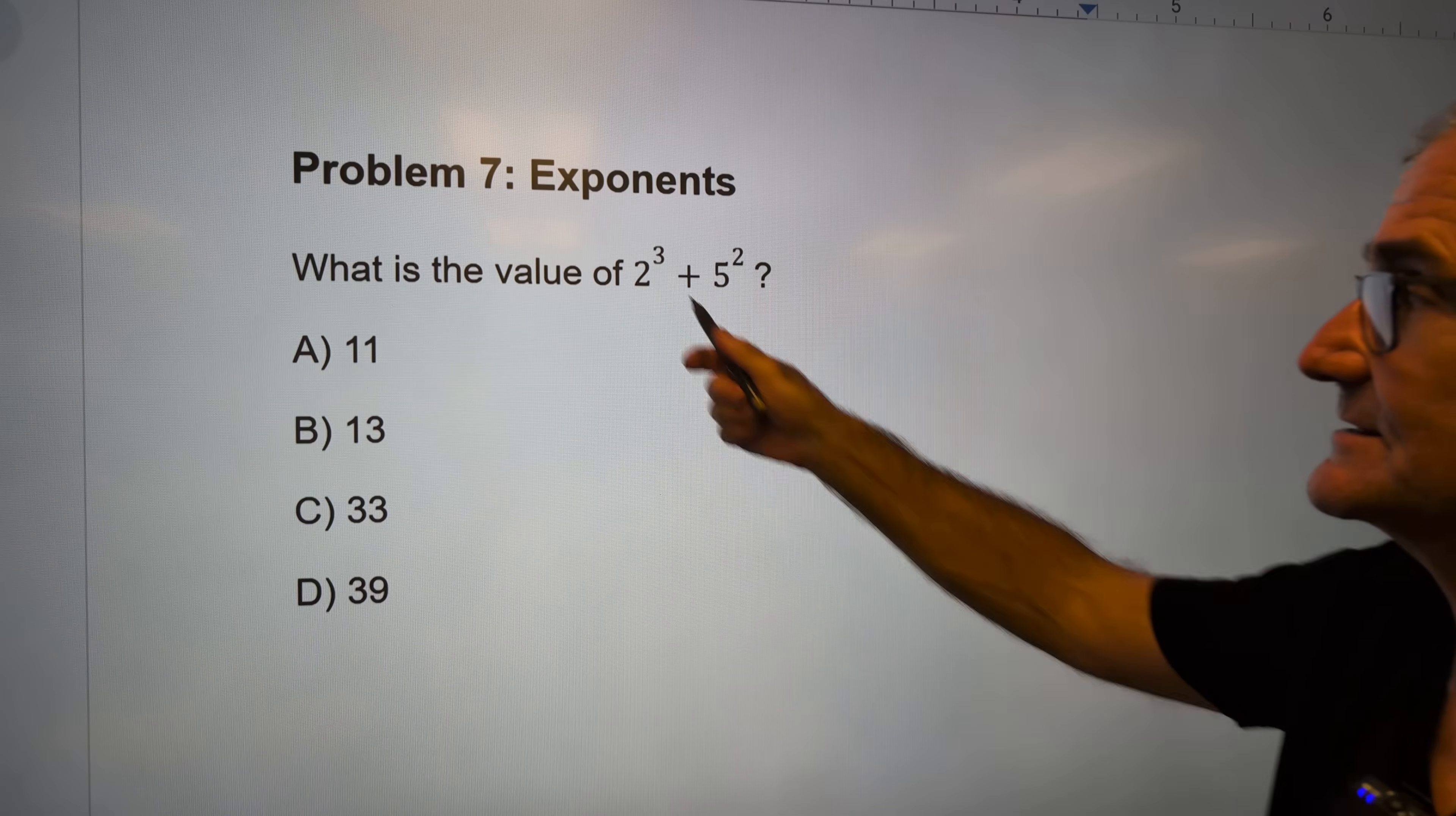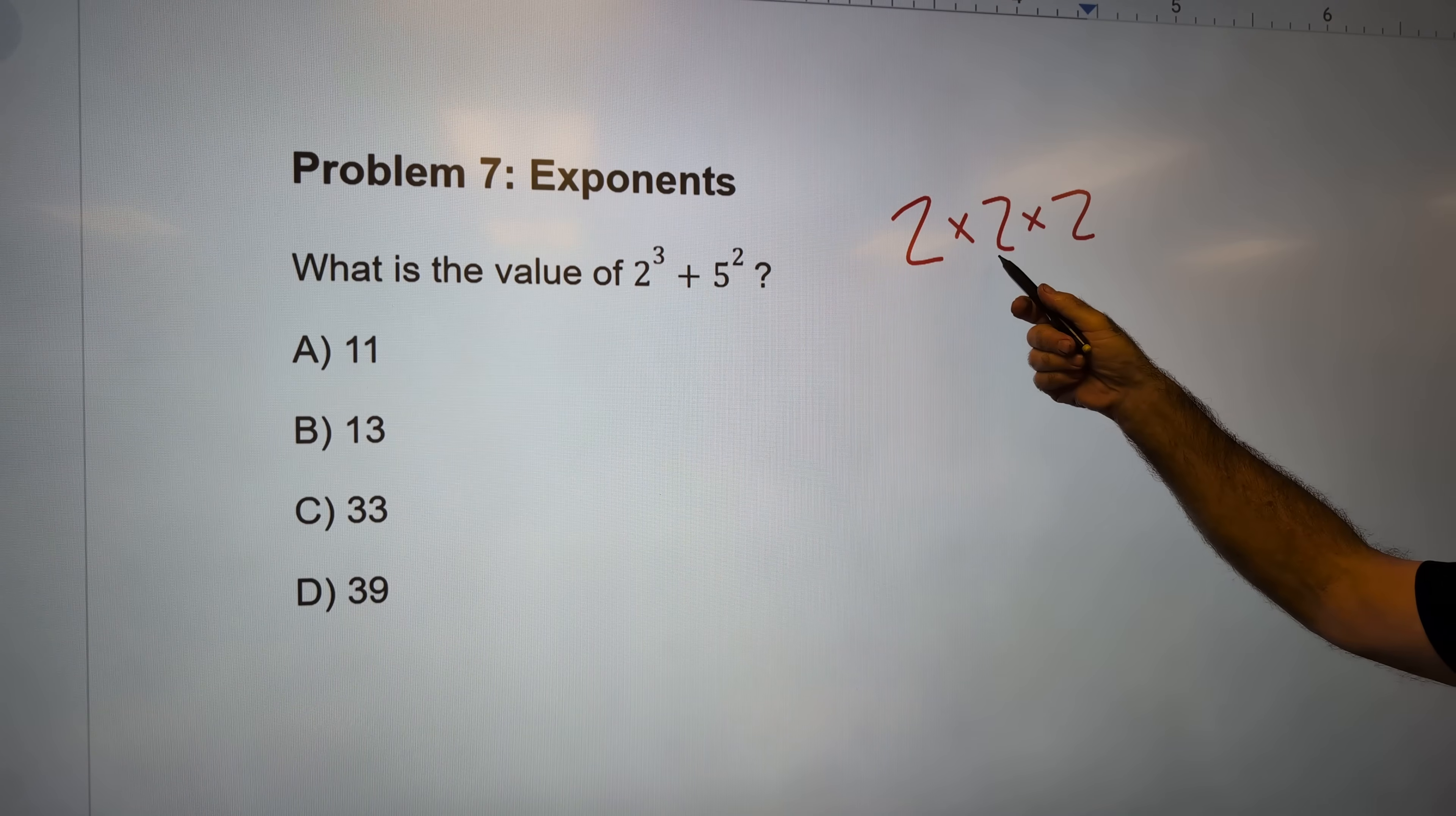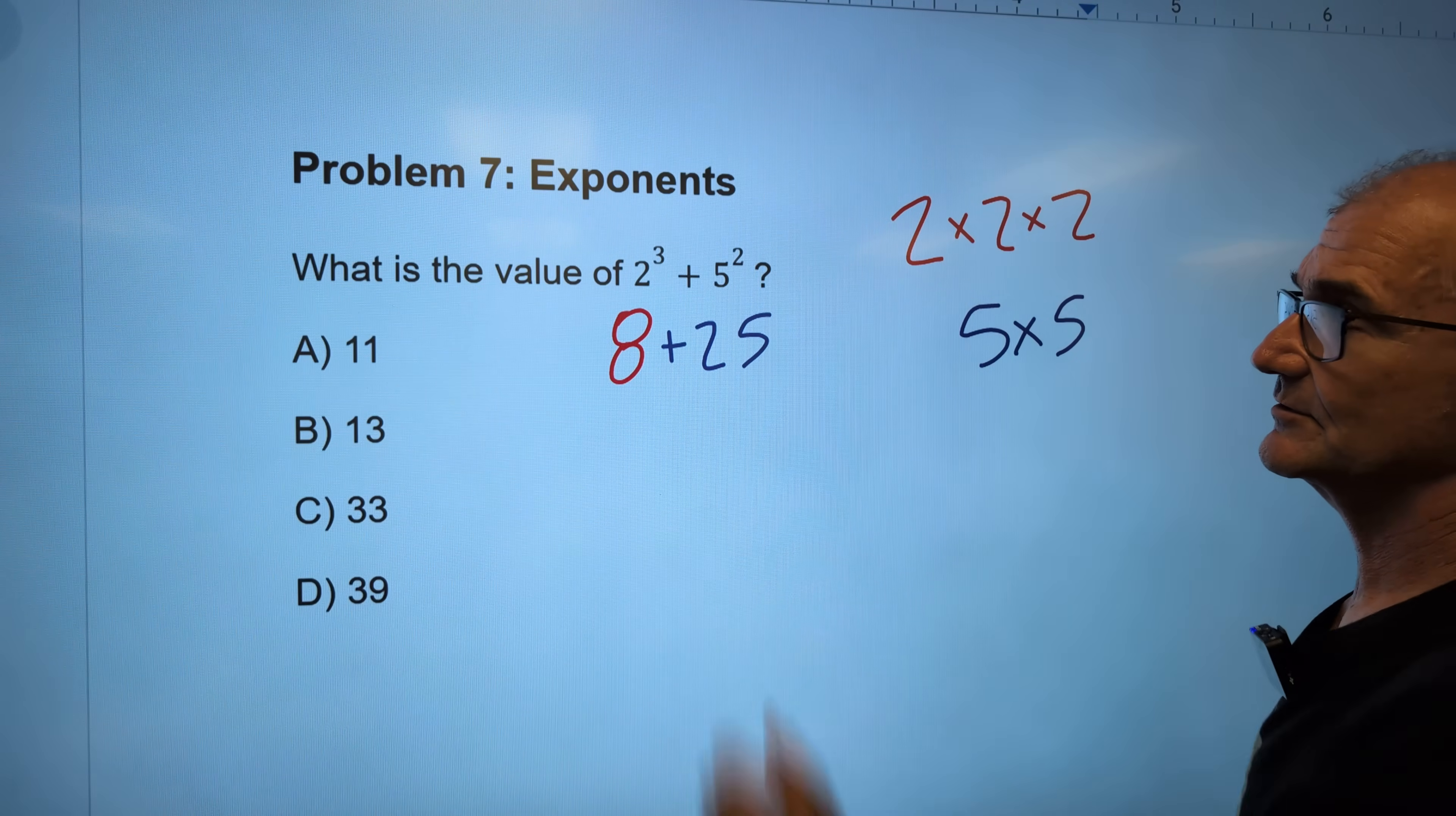What exponents mean, this thing right here means 2 to the third power. That means 2×2×2. This is telling you, you multiply 2 by itself 3 times. 2×2=4, times 2 is 8. So this is equal to 8. Then that 5 is just being multiplied by itself one more time. So a total of 2 fives. 5×5=25. You always do the exponents before the addition.